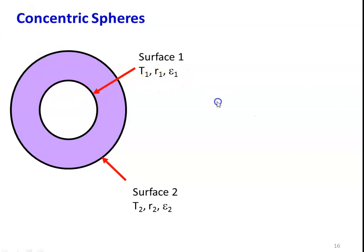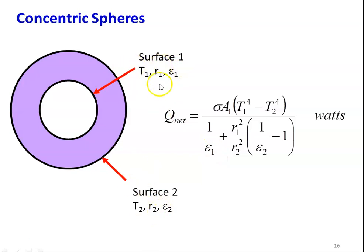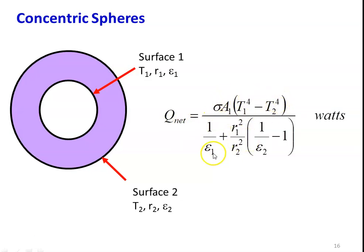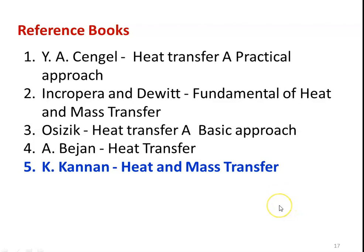For concentric spheres: surface area A1 = 4π·r1² for the inner sphere with emissivity ε1 and temperature T1; outer sphere has radius r2, emissivity ε2, and temperature T2. The net heat transfer is: Q_net = σ·A1·(T1⁴ − T2⁴) / [1/ε1 + (r1²/r2²)·(1/ε2 − 1)].